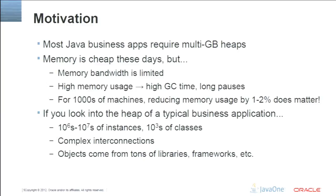High memory usage very often translates into high GC time and long pauses, and that can be a big problem. If you ask an average performance person what their main concern is these days, it will very likely be GC tuning. Also, as an increasing amount of computing goes to the cloud and companies find themselves managing thousands of machines, reducing memory usage by just a few percent can reduce the number of machines and costs considerably.